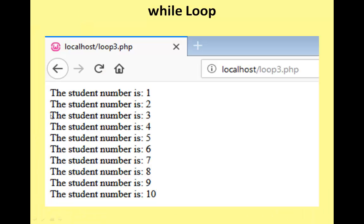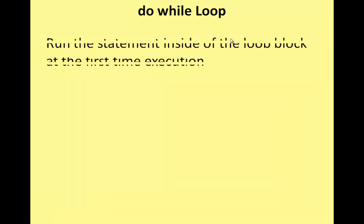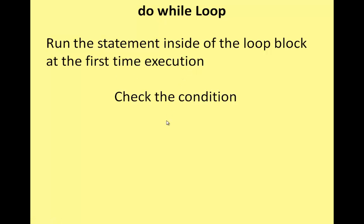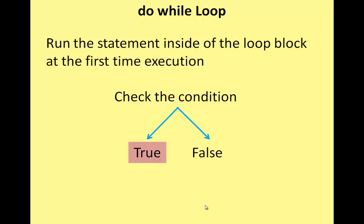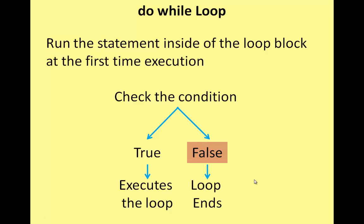The browser shows the output. Do-while loop. The statement in the loop block executes one time first, then the condition is checked. If true, the loop continues. If false, the loop ends.